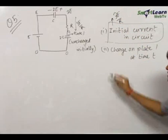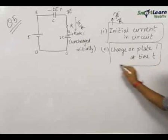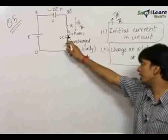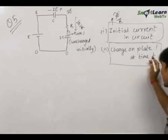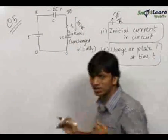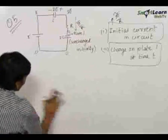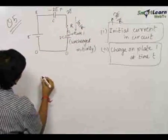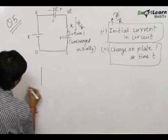The second part is a really important part. We need to find the charge on the plate of the capacitor 2C at any general time t. This is a general method which we use most of the time.